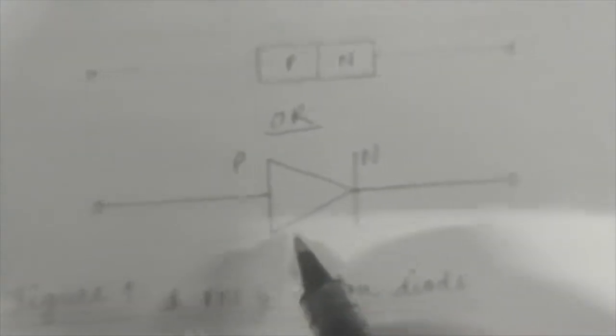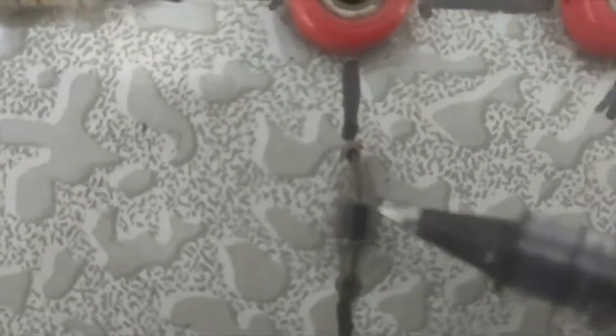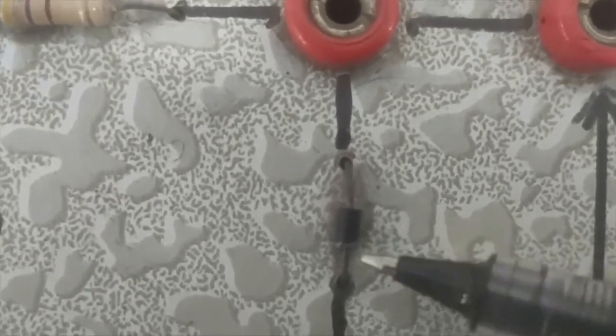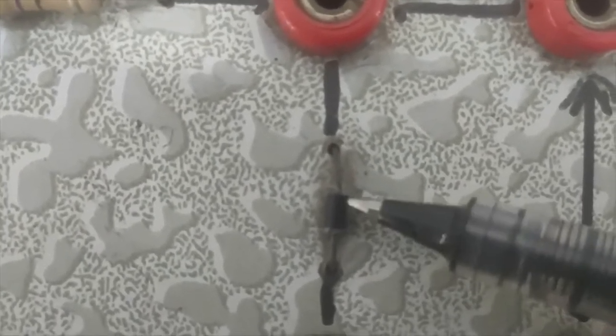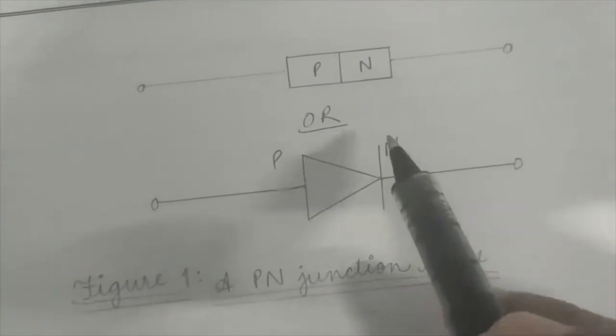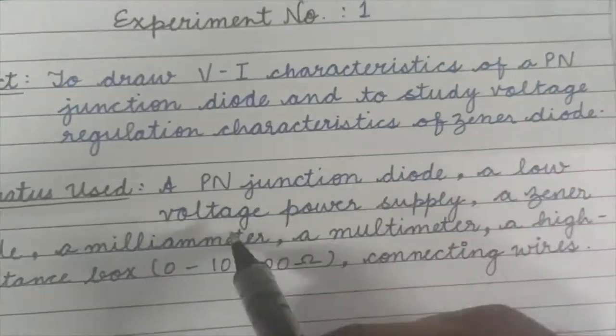The apparatus we need includes a PN junction diode. You can see this is my PN junction diode. The representation of this PN junction diode is like this — the arrow part is known as the P-type and this line is known as the N-type. The whole black part is the arrow and the gray line is the line. So this is how you represent a PN junction diode — the black part is the P-type arrow and the gray line is the N-type.